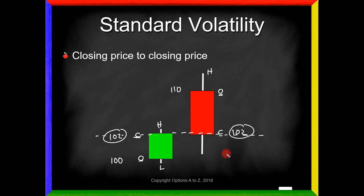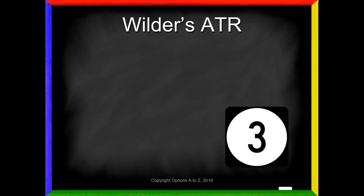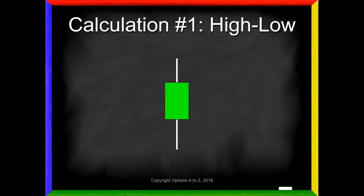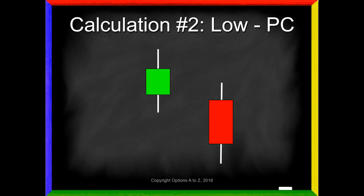Wilder's average true range is going to correct this problem. It uses three calculations and takes the highest of these three values, then averages those to get the average true range. Calculation number one: it's going to look at the high minus the low. Here's our high trade and here's our low trade — it simply subtracts those values to find how much variation exists between the high and the low. Then it compares that to two other calculations.